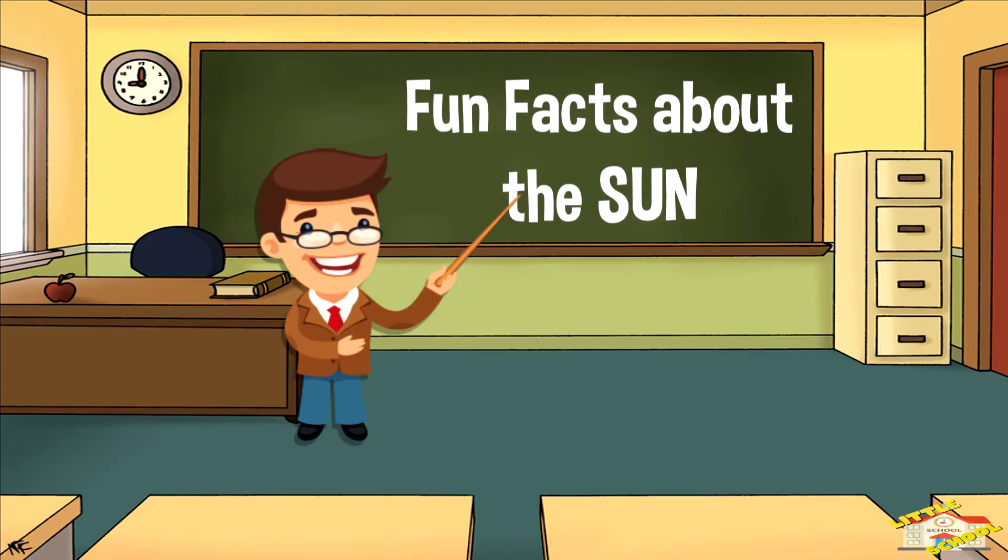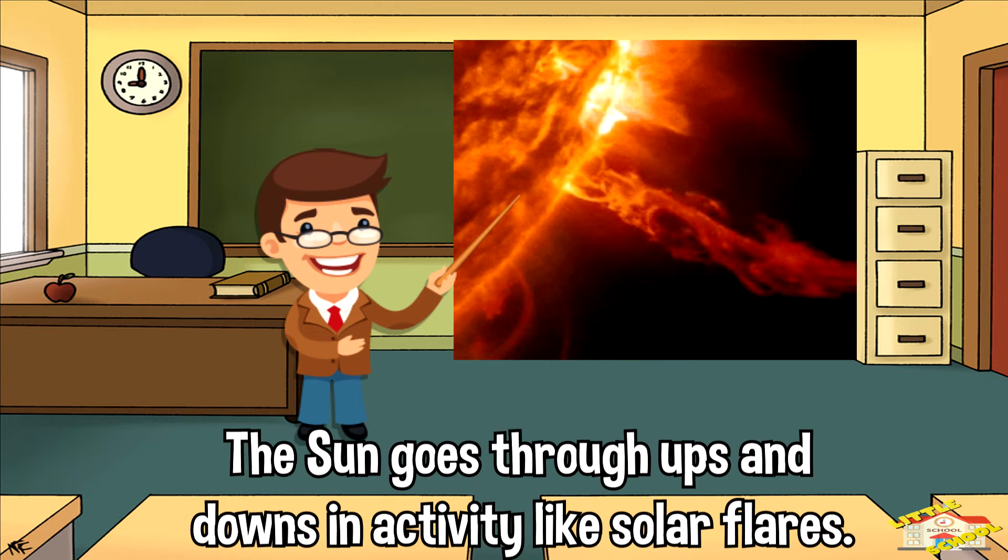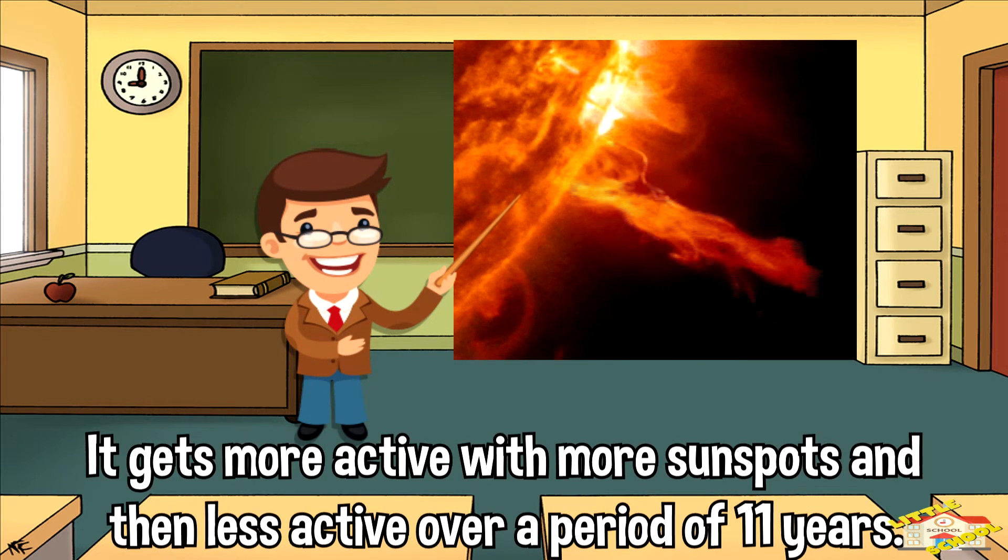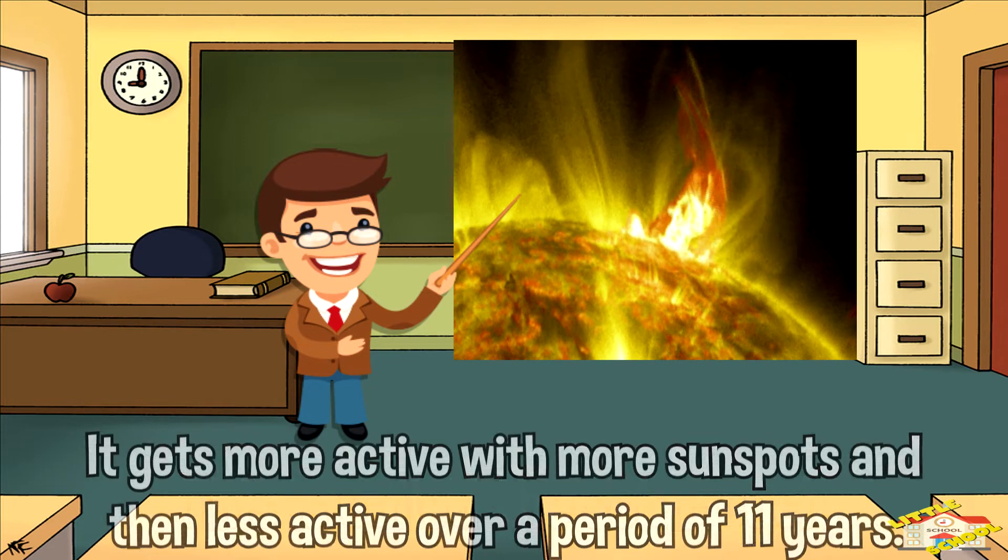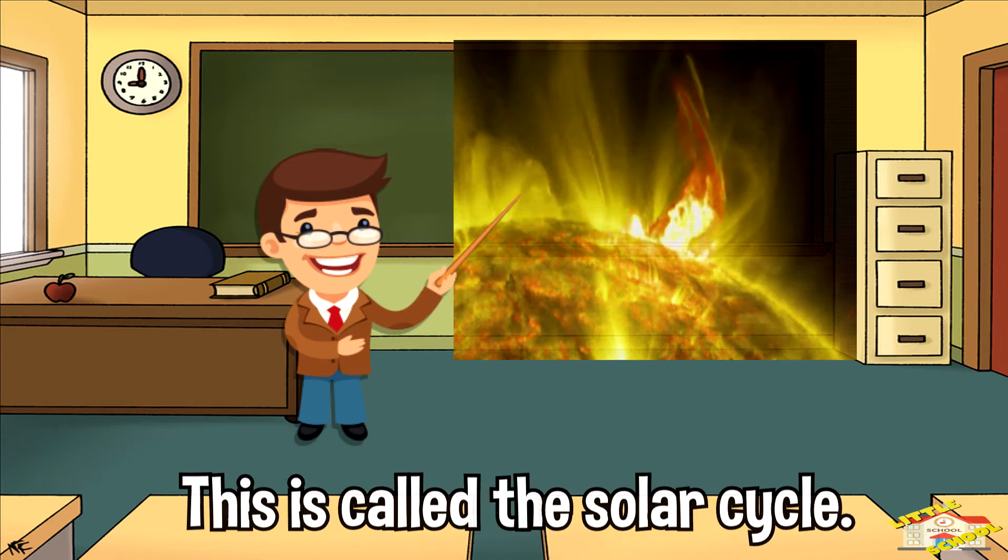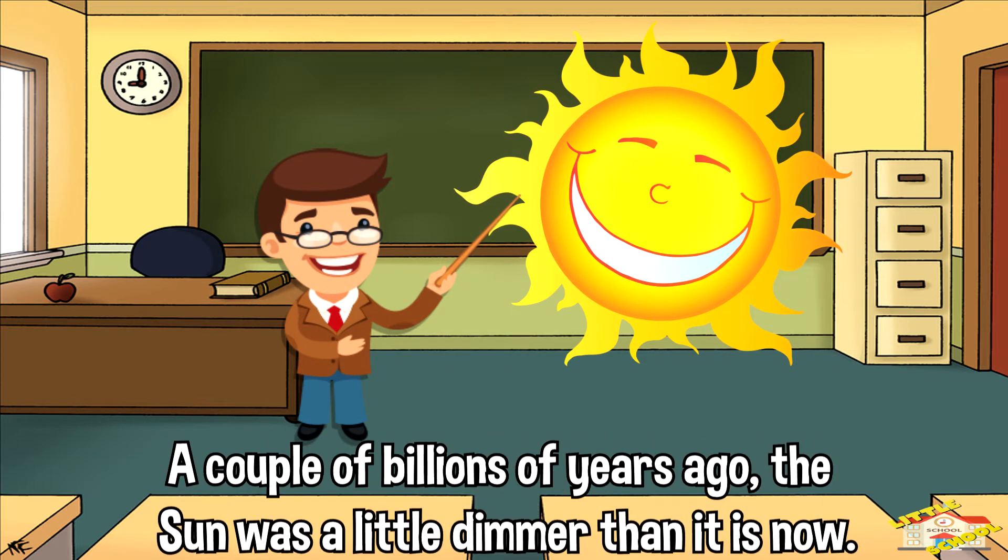More fun facts about the Sun. The Sun goes through ups and downs in activity like solar flares. It gets more active with more sunspots and then less active over a period of 11 years. This is called the solar cycle.